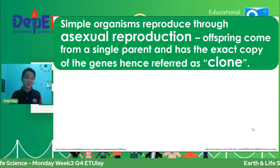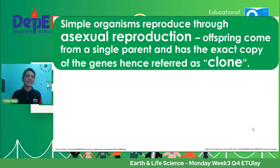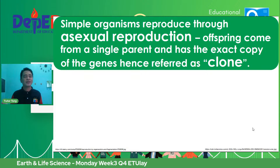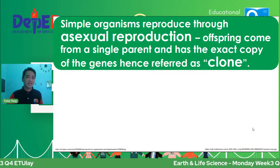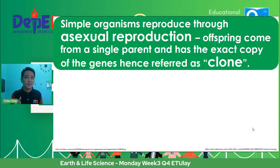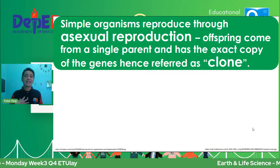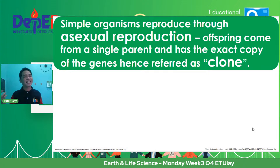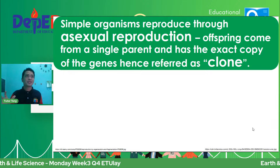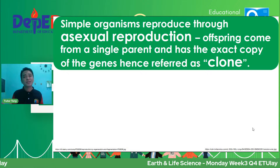To give you an overview: when we say asexual reproduction, single parent lang — hindi kailangan ng partner. No male or female needed. The offspring — the next generation organism produced by a single parent — carries the same genes as the parent. Scientists call that a clone. Just like what happens with hydra — small organisms found in pond or fresh water — na mag-grow ng bud at eventually mag-detach.